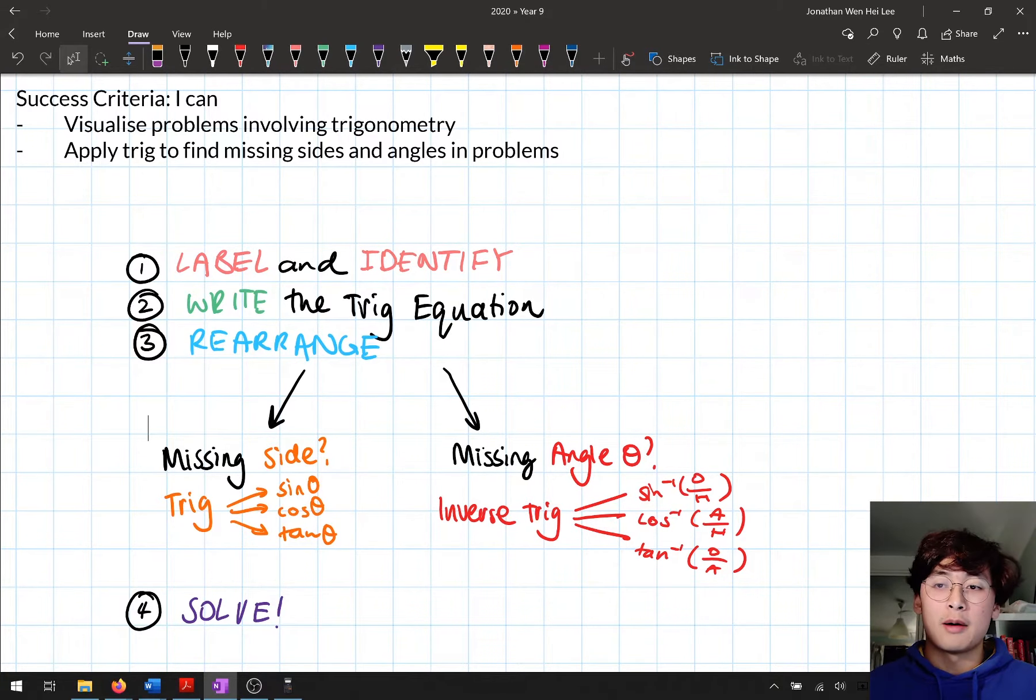But what we did last lesson was if we're finding a missing angle we use inverse trigonometry. Inverse trigonometry puts in the ratio and gets out the original angle. So if we're trying to find a missing side we use normal trig: sine, cos, tan. But if we're trying to find a missing angle we use inverse trig: inverse sine, inverse cos, and inverse tan.